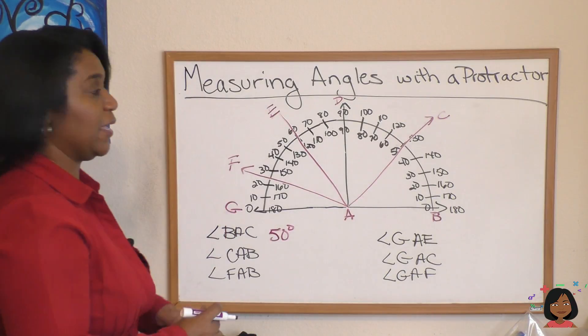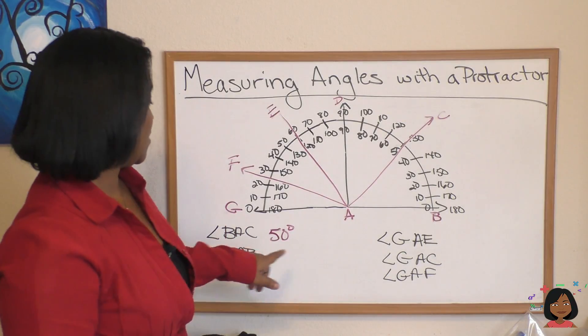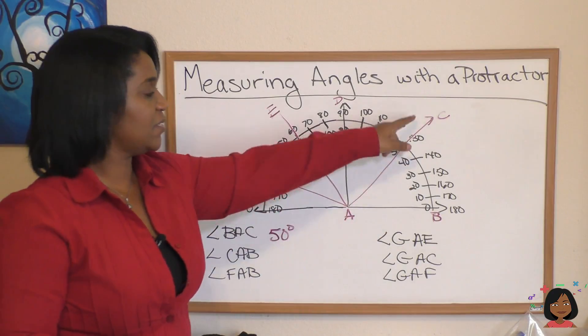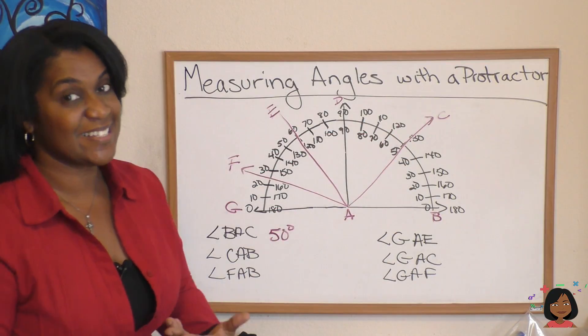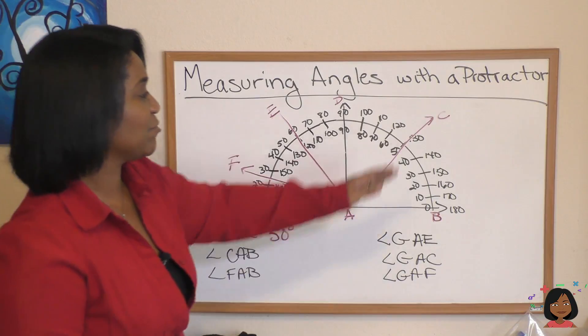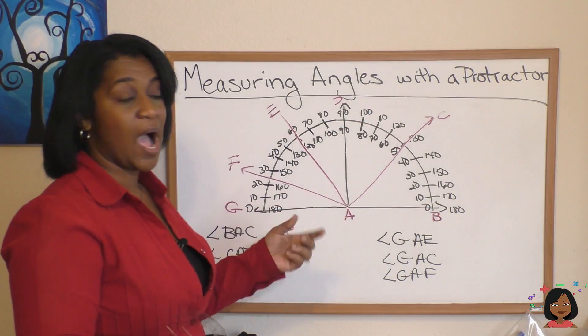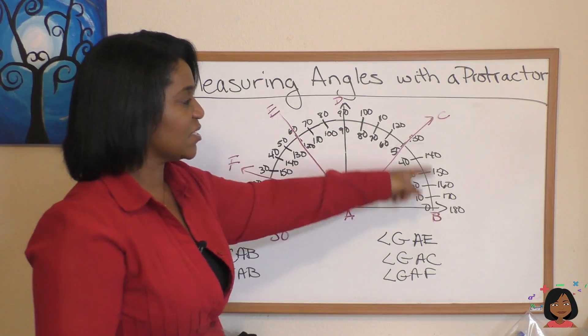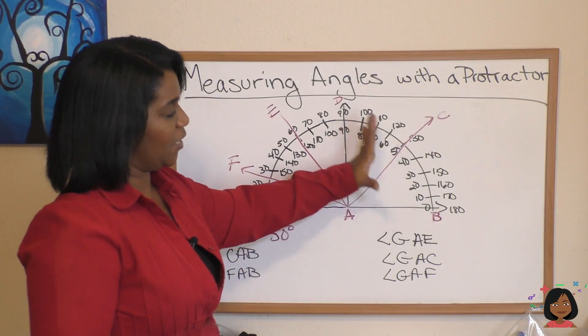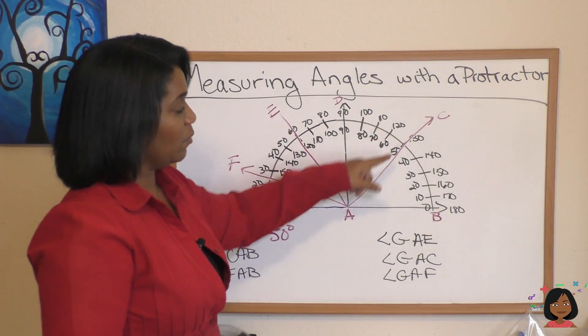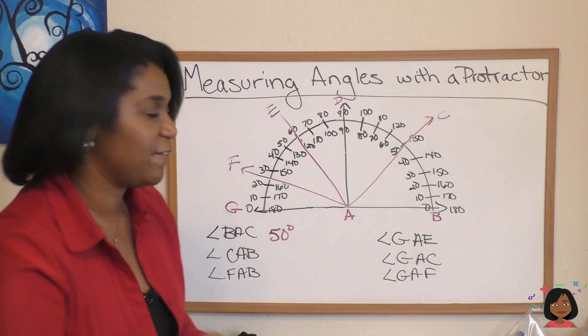What about CAB? So wait, I just did BAC. Now I'm doing CAB. It is the same angle measurement, I'm just starting from here. Does it mean I need to change the side that I'm measuring it on? No, it still is opening up this way. So the measurement is still going to be 50 degrees.